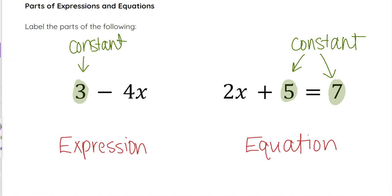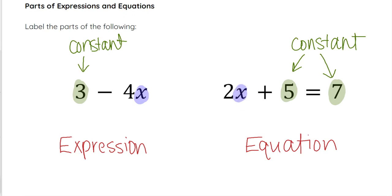Now, a variable is typically a letter that is used to represent an unknown value. Variables are typically things like x, y, and z, but it could be other letters as well. These are going to be variables that represent unknown or changing values.